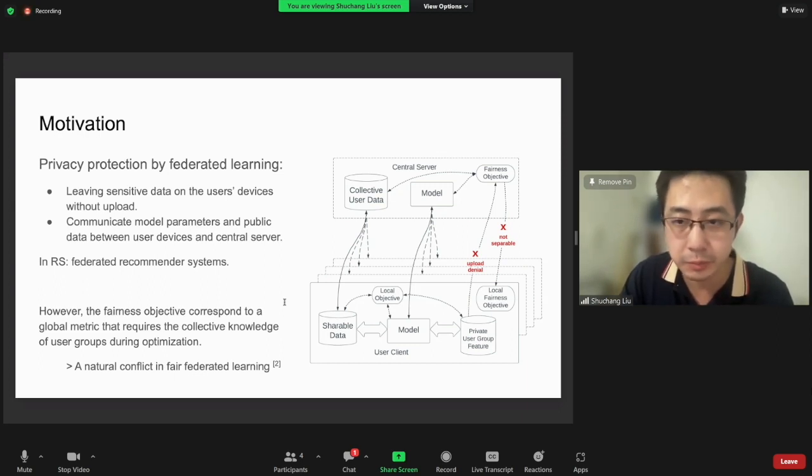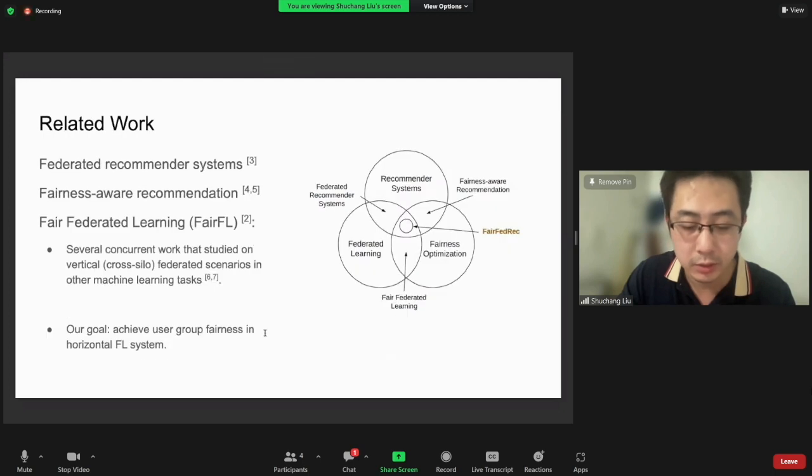But in the algorithmic perspective, the fairness control needs this sensitive group information, but the federated system wants to protect it. This natural conflict has also been recognized in other related works in recent fair federated learning research. While some existing works study the vertical federated learning scenarios where each machine has its own user group distributions,